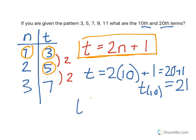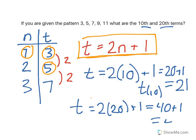And for the 20th term, we do the exact same thing. So 2 times 20 plus 1 gives me 40 plus 1, so the 20th term is 41. And that's the answer to our question.